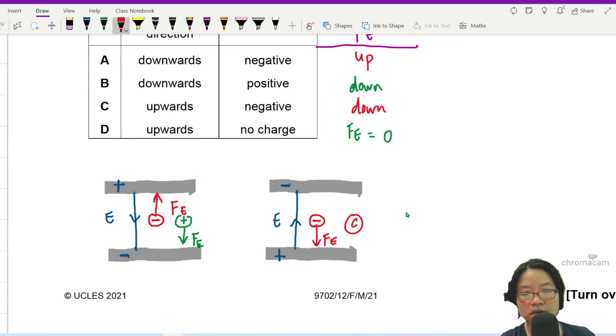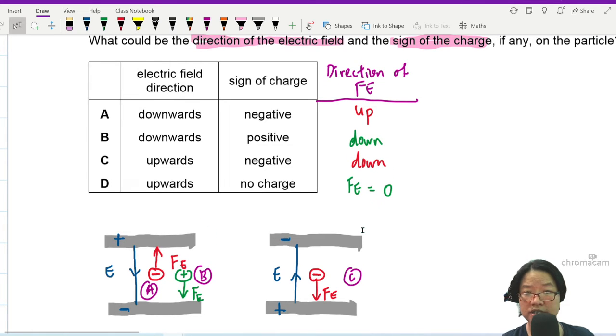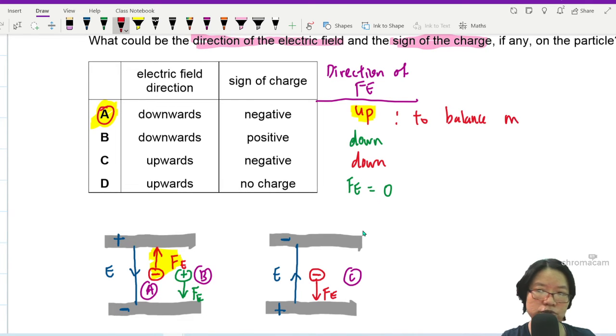So there's only one that gives us the direction of the force that we want. To balance our weight, we need FE to be pointing upwards. Okay, so the answer is A. So I'll write here. To balance Mg, which is downwards.